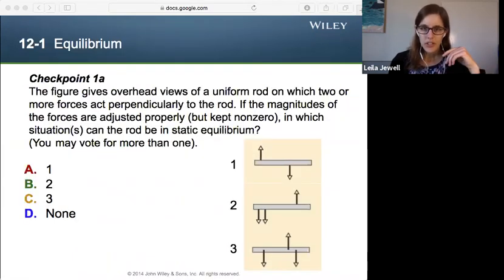So let's look at a checkpoint. It says the figure gives an overhead views of a uniform rod on which two or more forces act perpendicularly to the rod. If the magnitudes of the forces are adjusted properly, kept non-zero, in which situations can the rod be in static equilibrium? You can vote for more than one. I want you to think about this. So go ahead and hit pause and see what your answers.